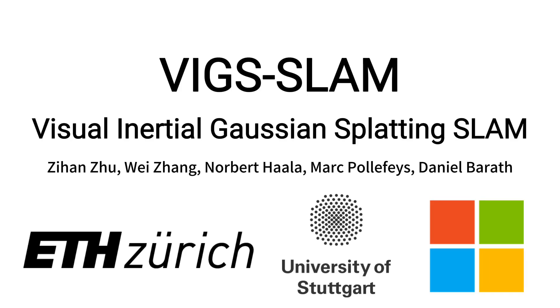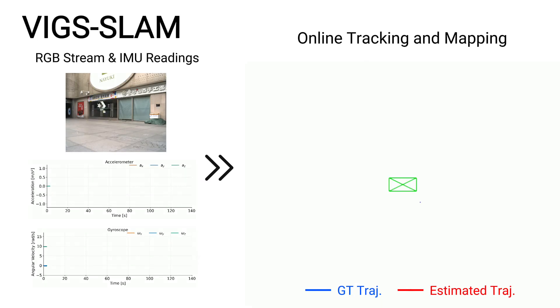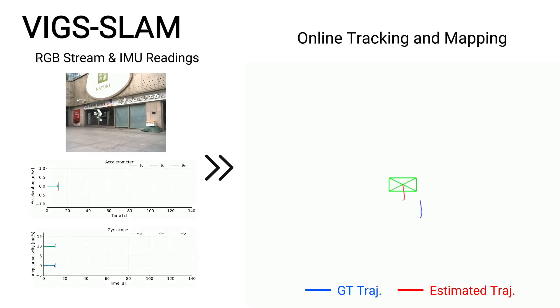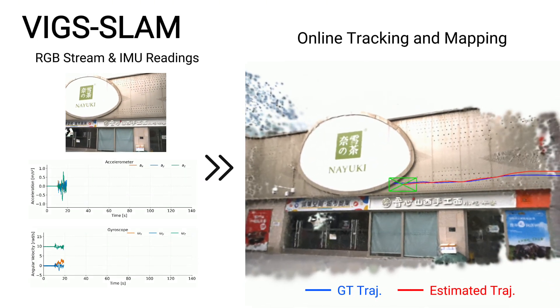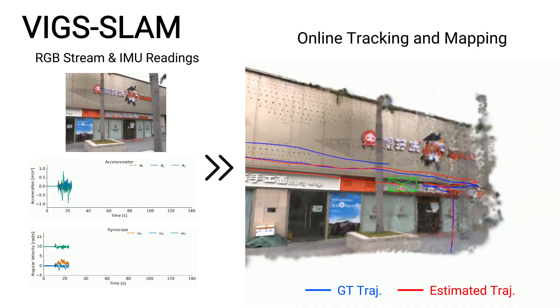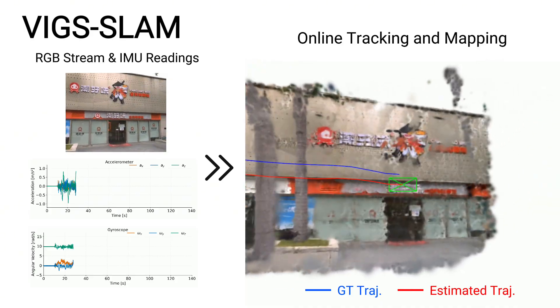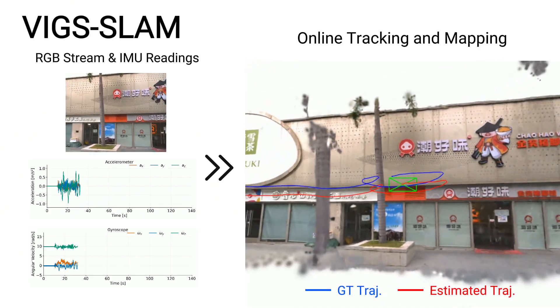We present VIGS SLAM, Visual Inertial Gaussian Splatting SLAM. Given an RGB stream and IMU readings, our method robustly tracks the camera trajectory while reconstructing a 3D Gaussian map.